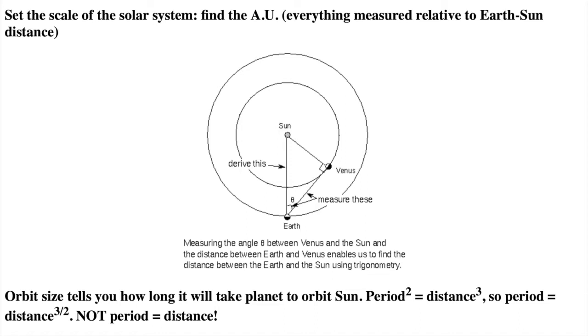Before we move on to other planet properties, recall how orbits work through Kepler's third law. The orbit size tells you how long it takes anything to orbit the sun. Period squared equals distance cubed. So with some algebra, period equals distance to the three halves or 1.5 power. It is not period equals distance.